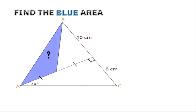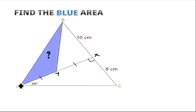Welcome back viewers. We need to determine the blue area. Let us start by labeling the unknown vertices — this point will be X and this point will be Y. To find the blue area, we must first find the unknown length AX, then divide it into equal parts, and find the length AC. Those two values will be enough to determine the blue area.